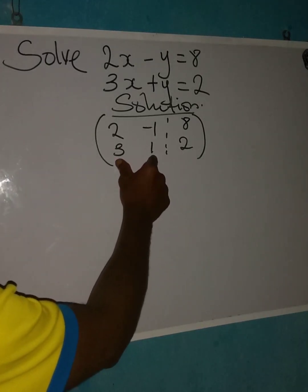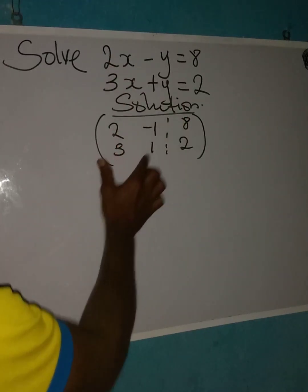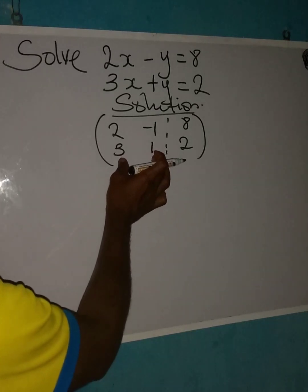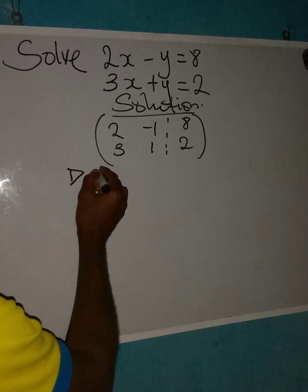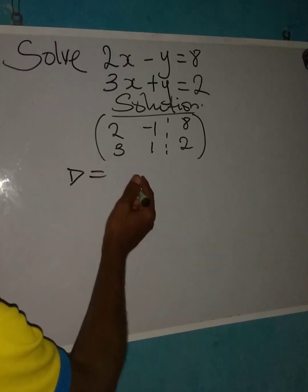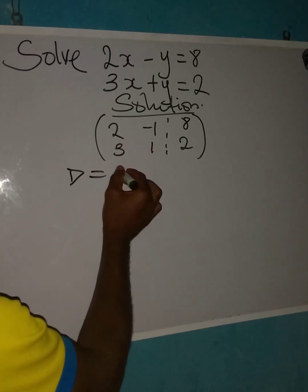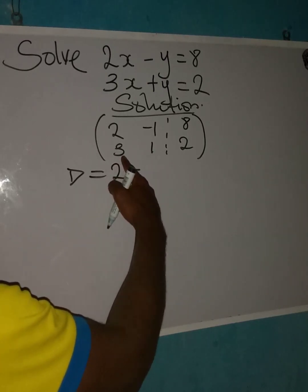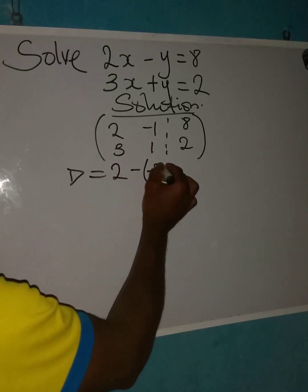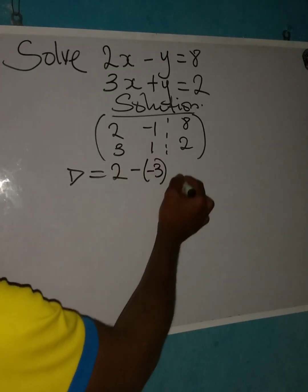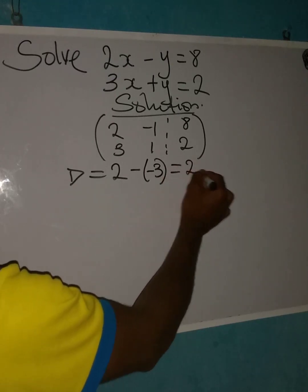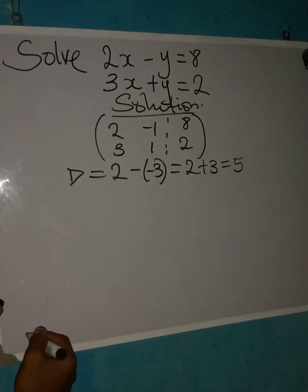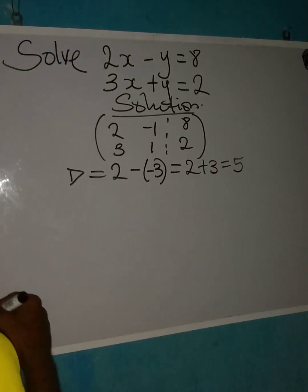The first thing we are going to do is find the determinant of the root matrix — that is 2, 3, minus 1, 1. To find the determinant D, we have D equal to 2 times 1, which is 2, then minus 3 times 1, which gives minus 3. So the determinant D equals 2 plus 3, which is 5.